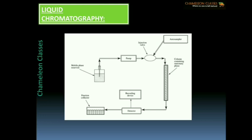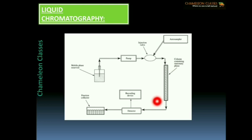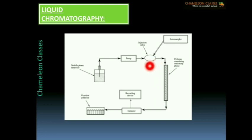As you can see, there is a mobile phase reservoir where the buffer or mobile phase is stored. By the help of a pump, it is injected into the column. There is a sample injection point where the sample can be injected manually or using auto-samplers at a given flow rate. The injection valve helps in convenient sample injection and also helps maintain the gradient of the mobile phase in binary or quaternary systems where more than one mobile phase is used.